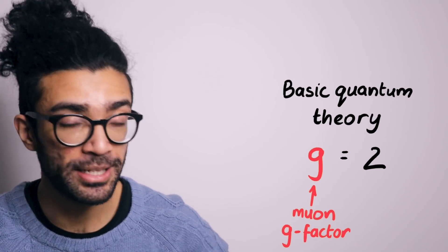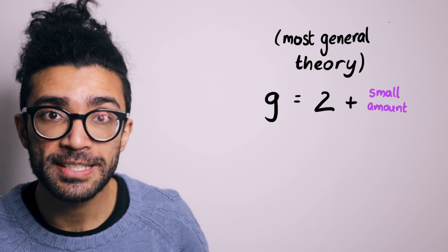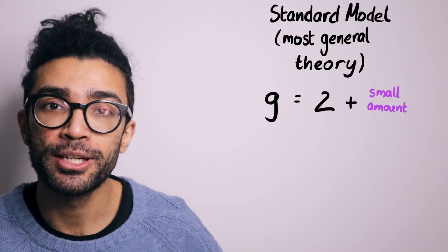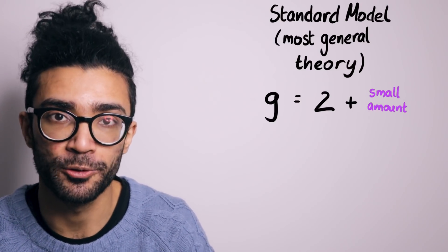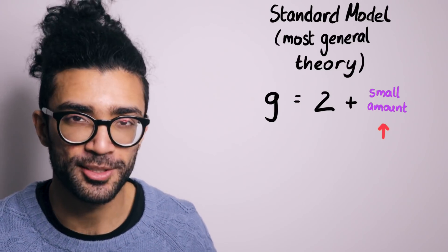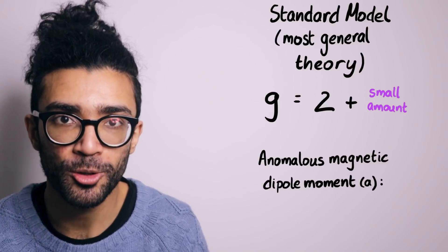If we account for not just basic quantum mechanics, which is where we got g is equal to 2 from, but all of the physics that we know in all of the standard model, as it's known, then the predicted value of the g factor for a muon is slightly larger than 2. We can quantify this difference, because it's so very small, by considering what's known as the anomalous magnetic dipole moment.